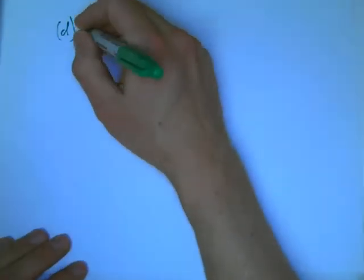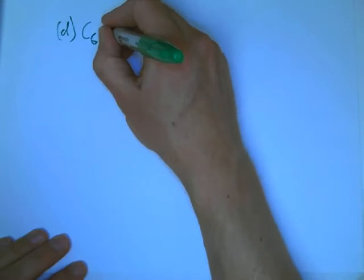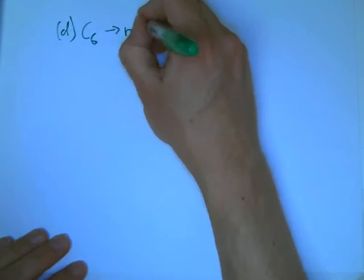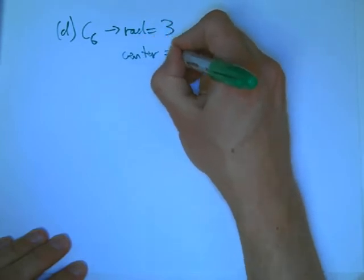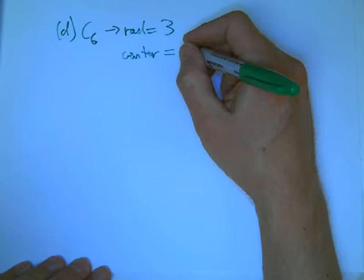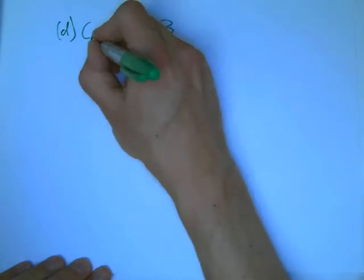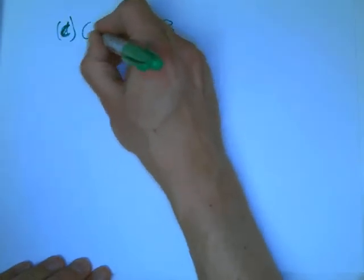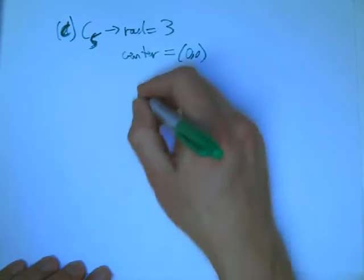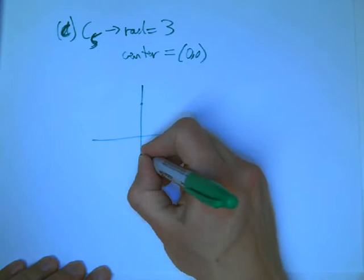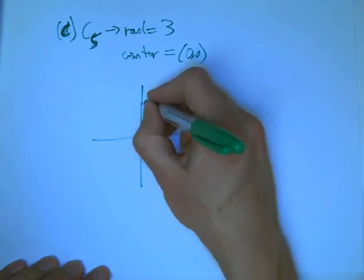Let's do D. I'm going to skip to D and I'm going to do everything. C6, radius equals 3, actually no, let's do C5. This is C5, radius equals 3, and center equals (0, 0), because that's probably the most interesting one, or one of the more interesting ones.